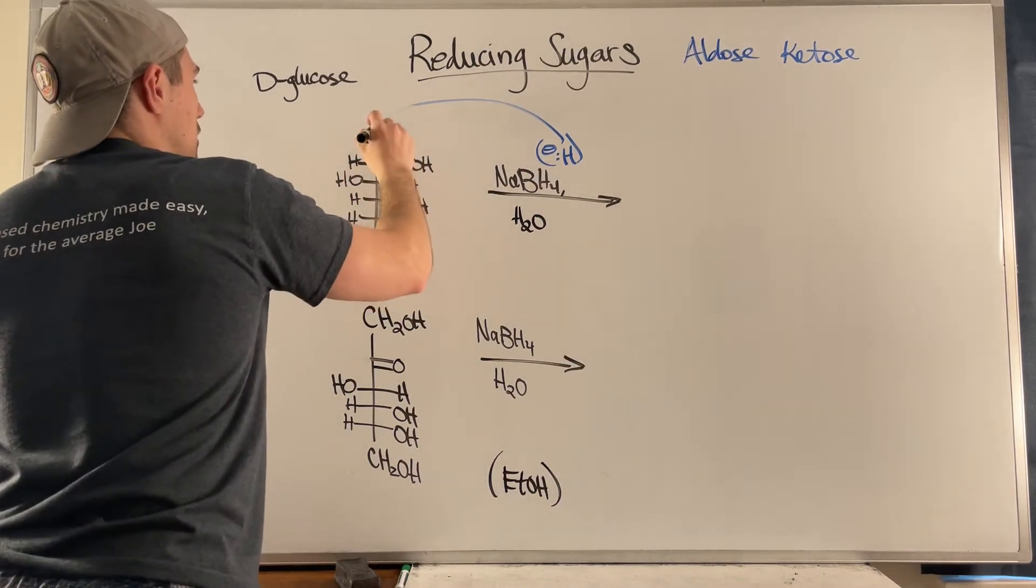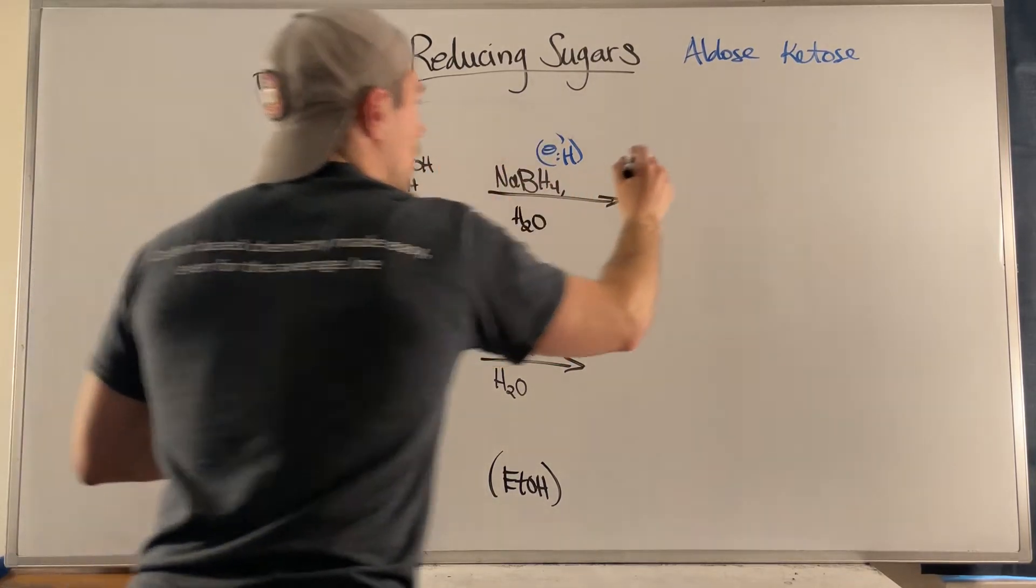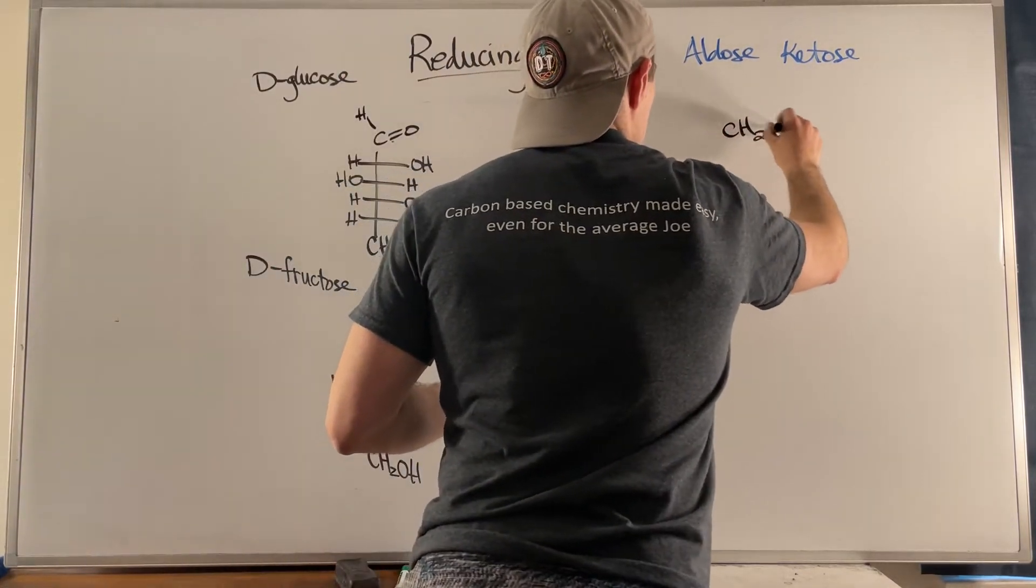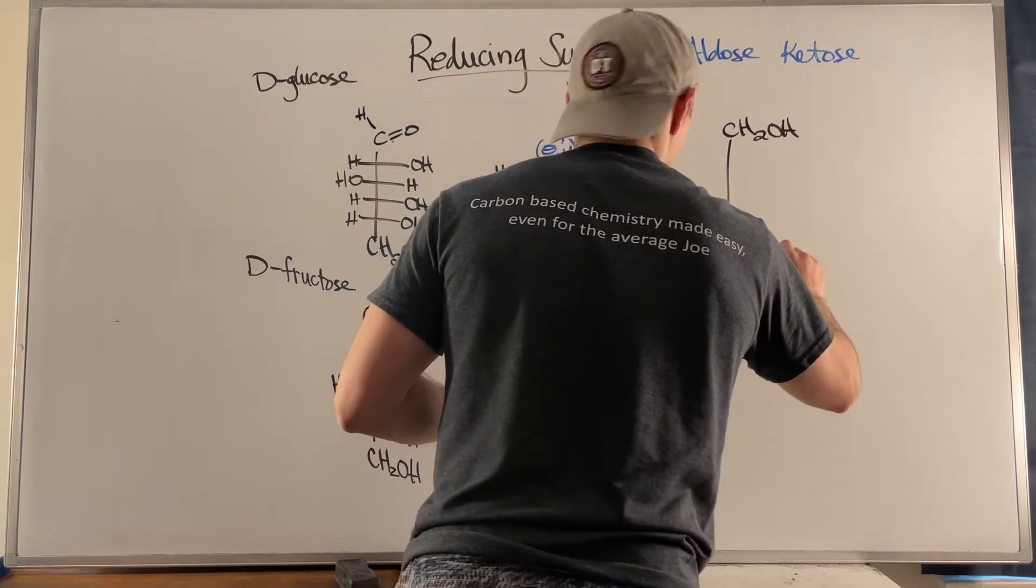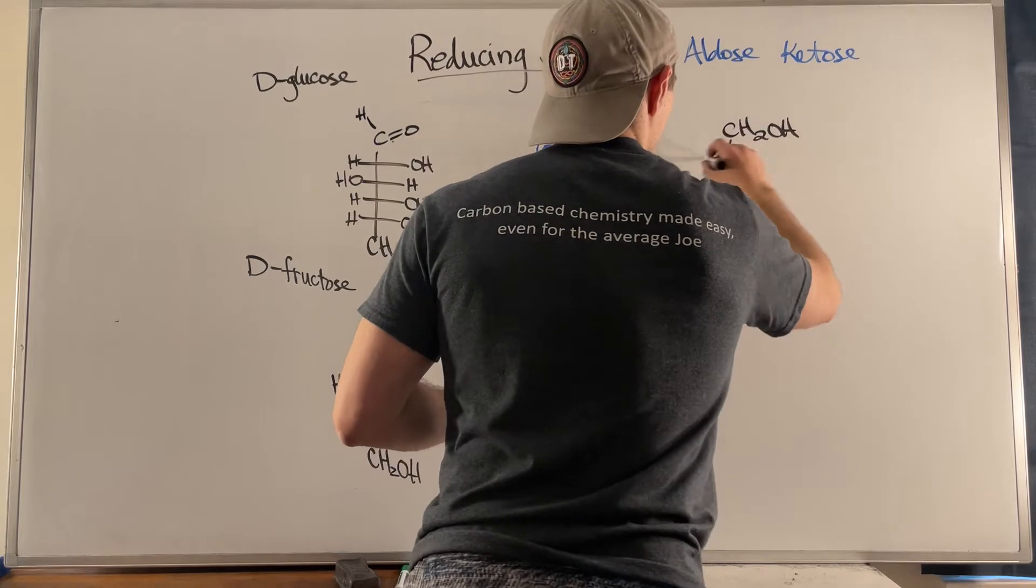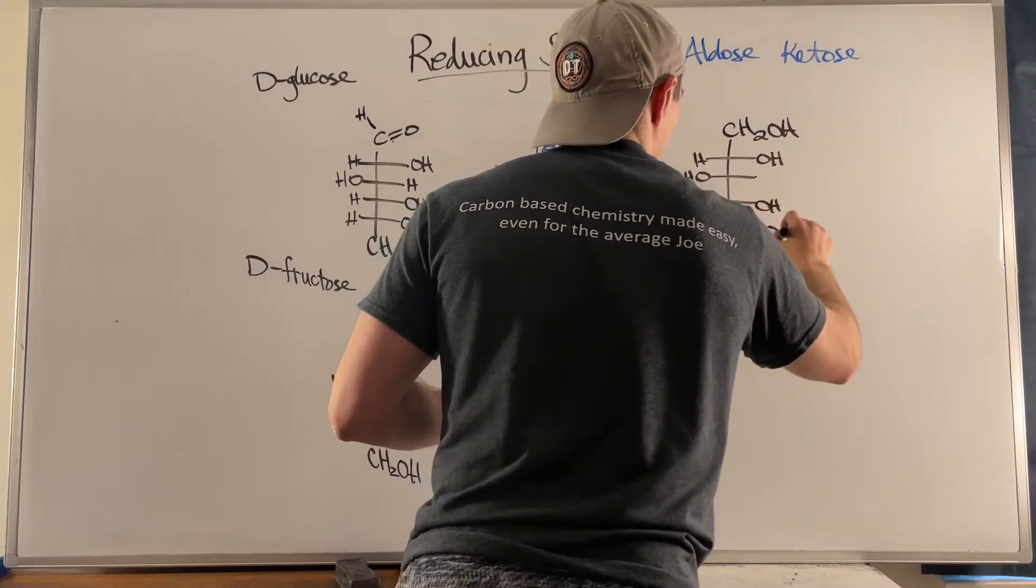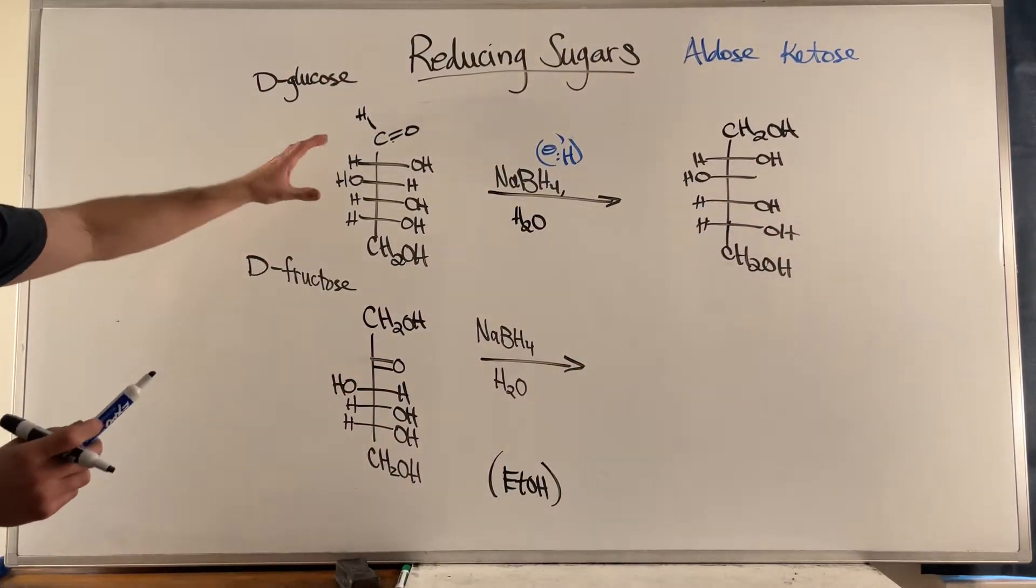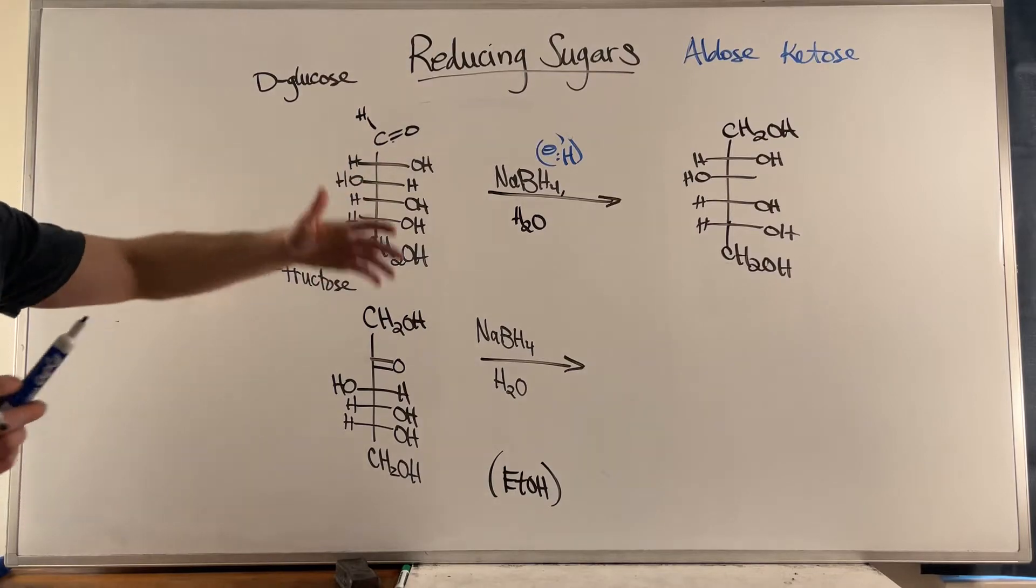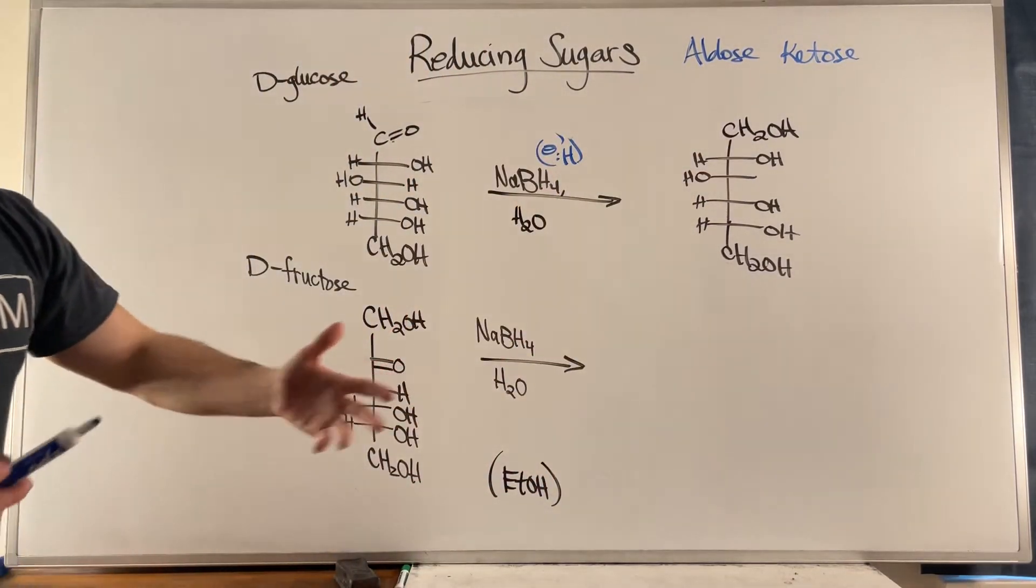You're going from an aldehyde to an alcohol, so your product will just look like this for an aldose. Just make sure you don't miss redraw your sugar when you're doing it. Essentially it's the same deal, but instead of oxidizing just the top, we're just reducing just the top.